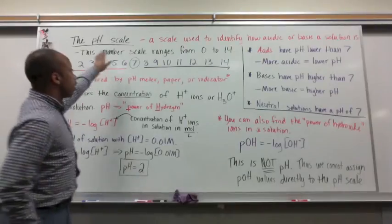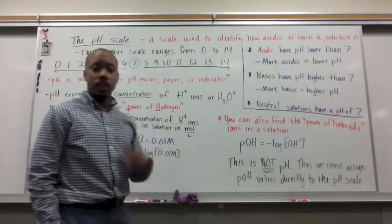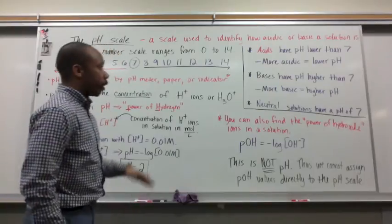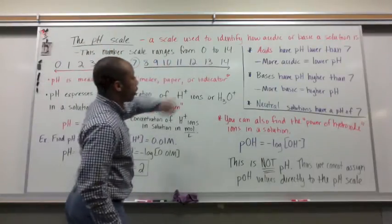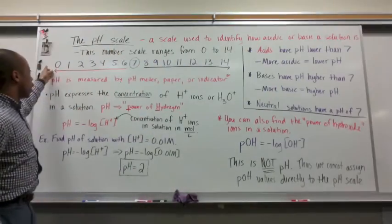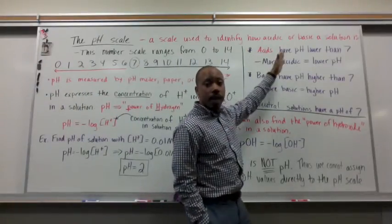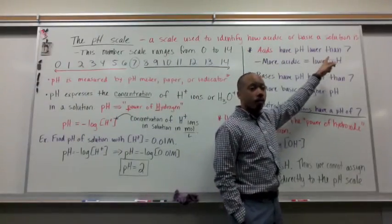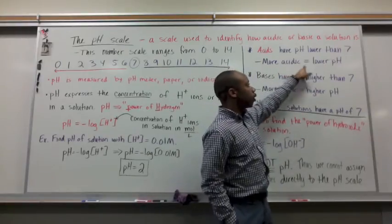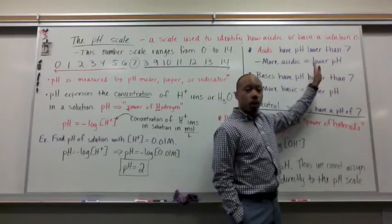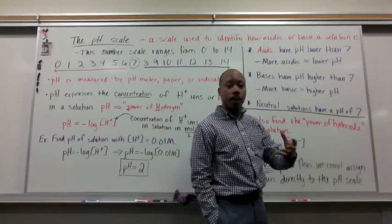Now the pH scale is a scale used to identify how acidic or basic a solution is. This scale ranges from 0 to 14. Here's an example, 0 all the way to 14. Now acids have a pH that is lower than 7. The more acidic you are, the lower your pH. So lower than 7, the closer you get to 0, the more acidic you're becoming.